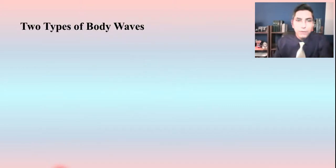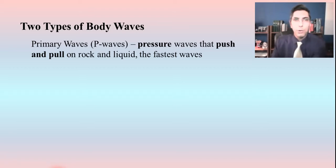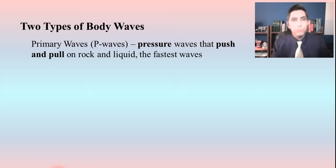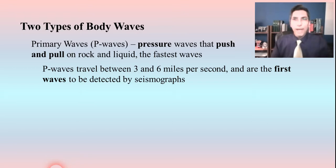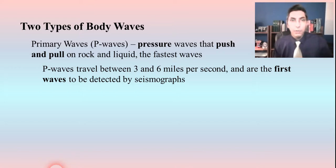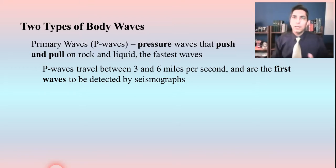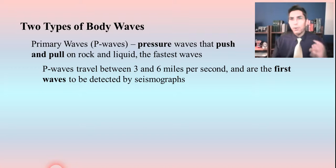There are mainly two types of body waves: primary waves and secondary waves. Primary waves — called P waves — are pressure waves that push and pull on the rock and liquid inside the earth. These are the fastest waves emitted from an earthquake, traveling between three and six miles per second. Almost as soon as the earthquake takes place at the focus, these body waves are flying out and are the first waves to be detected by seismographs.